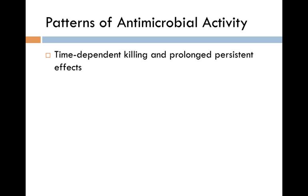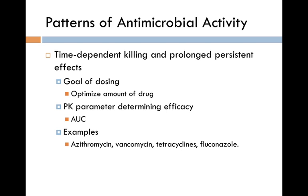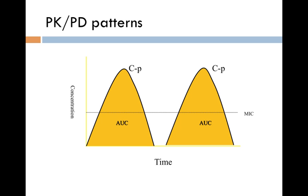Time-dependent killers with prolonged persistent effects — here we want to optimize the amount of drug, so we look at area under the curve. Examples include azithromycin, vancomycin, tetracyclines, and fluconazole. So for PK-PD patterns: concentration increases to Cmax then decreases, giving us the area under the curve and peak concentrations. Peak concentration-to-MIC ratio, area under the curve, area under the curve above the MIC, and time above the MIC are all parameters we can examine.